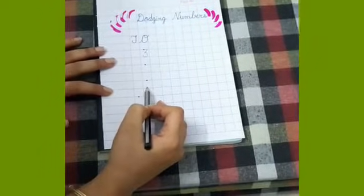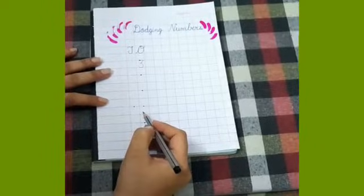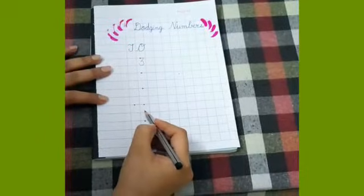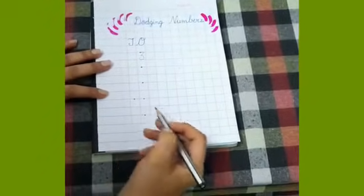Next number is number 10. 10. 1, 0, 10. How you will write number 10? 1, 0, 10.